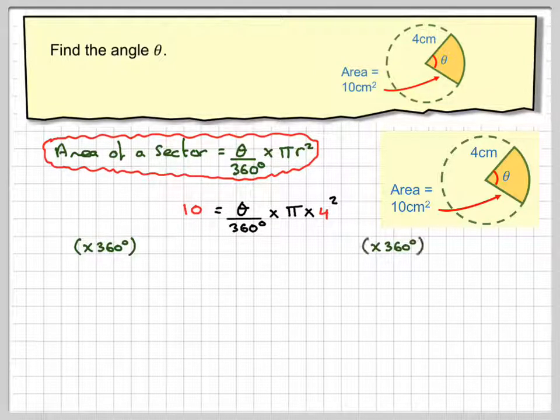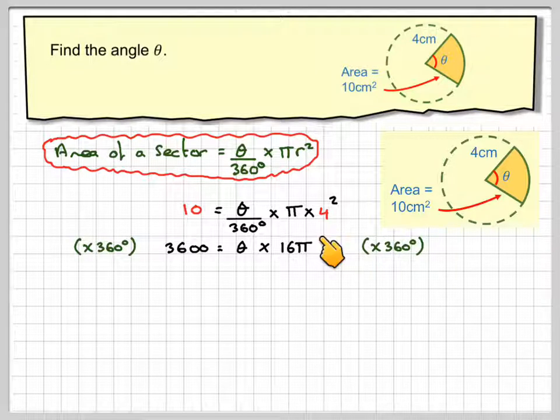Multiplying both sides by 360, so 10 times 360 makes 3600, is equal to theta times 16π. And 4 squared is 16, so we get 16π.